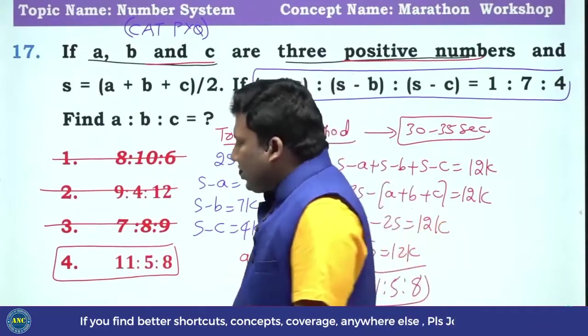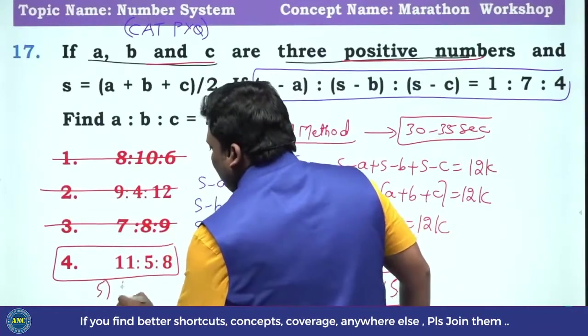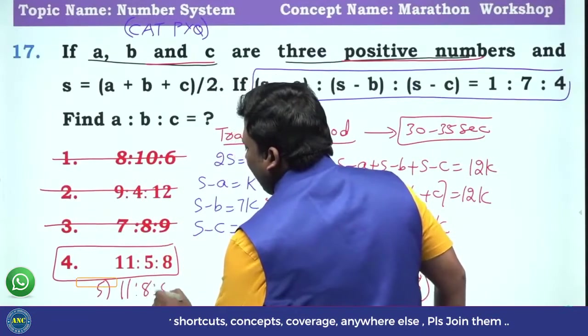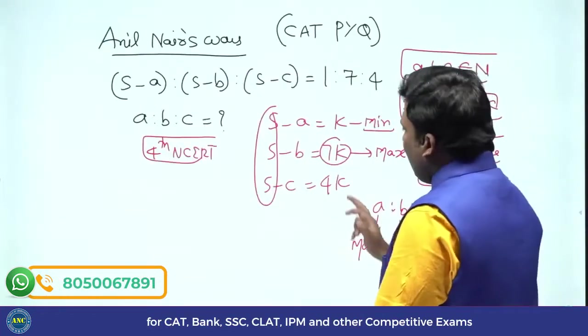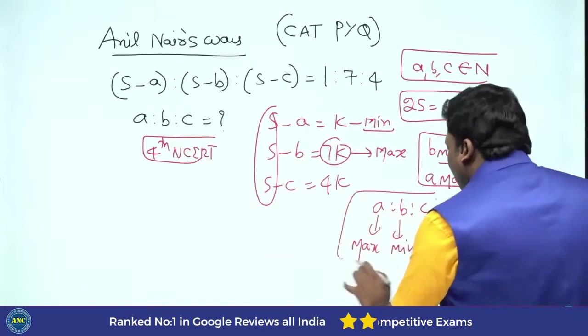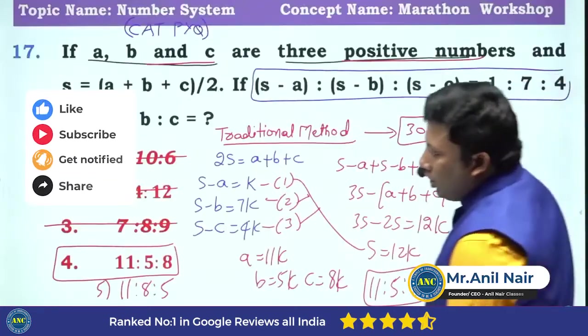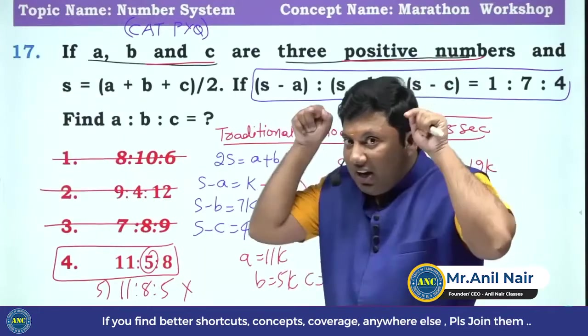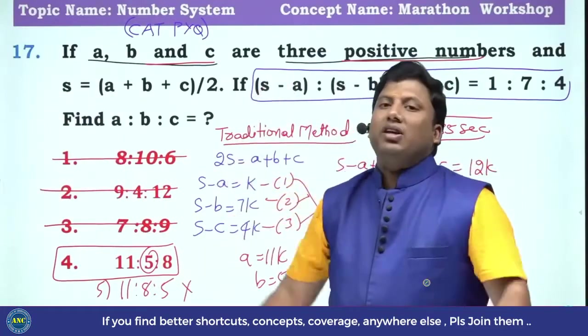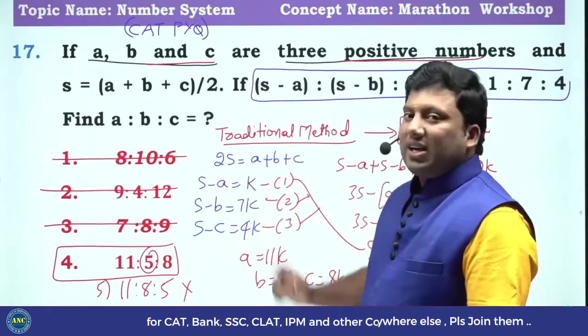Hey Anil sir, what if A, maximum two options are there? Suppose 11 : 8 : 5 is there. What is the next condition that I told you? Next condition is B should be minimum. B is minimum or not? Idea is to give a direction to the way that you solve it. I hope this idea is clear.